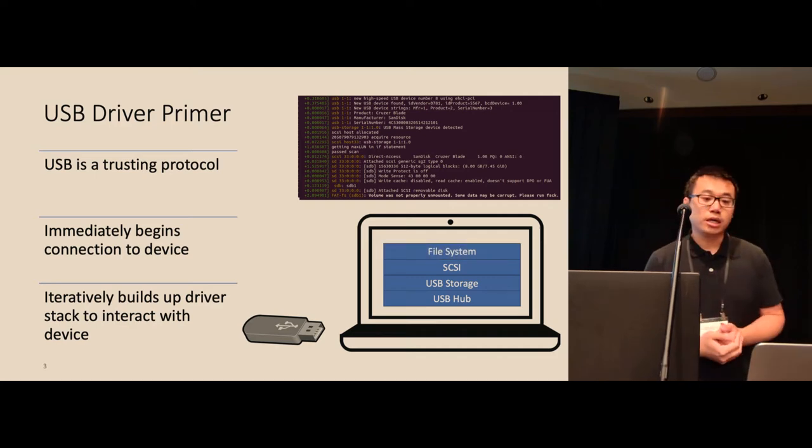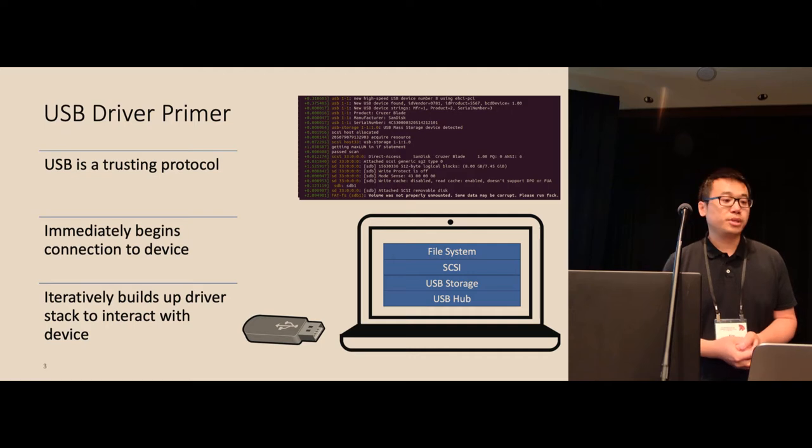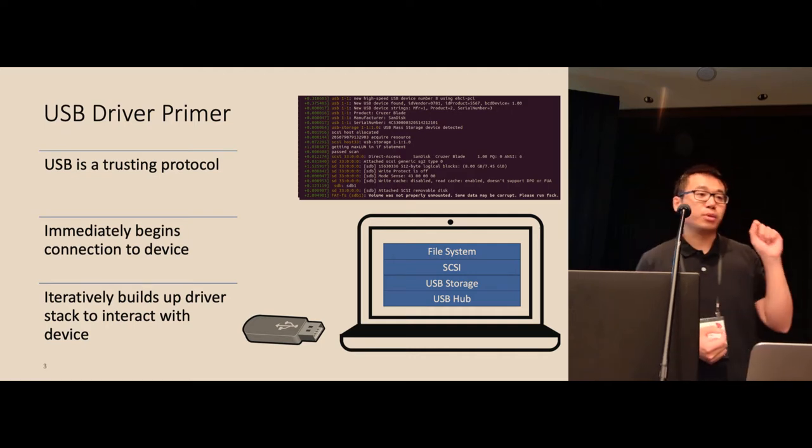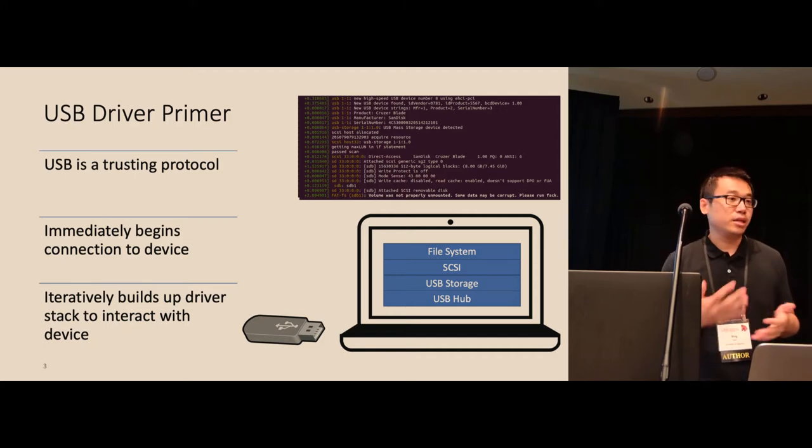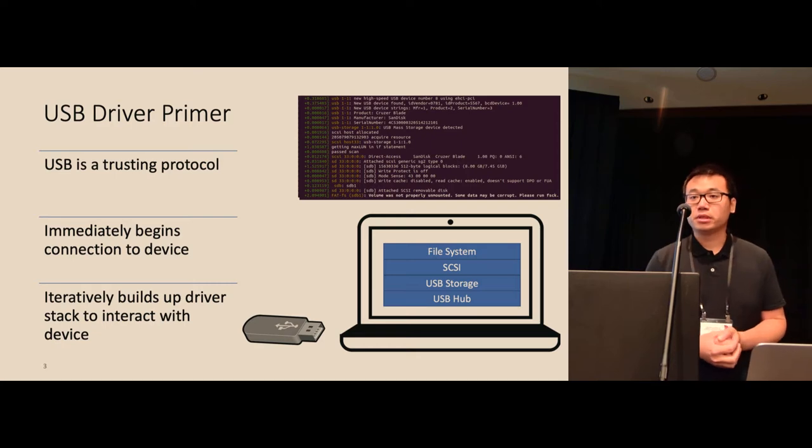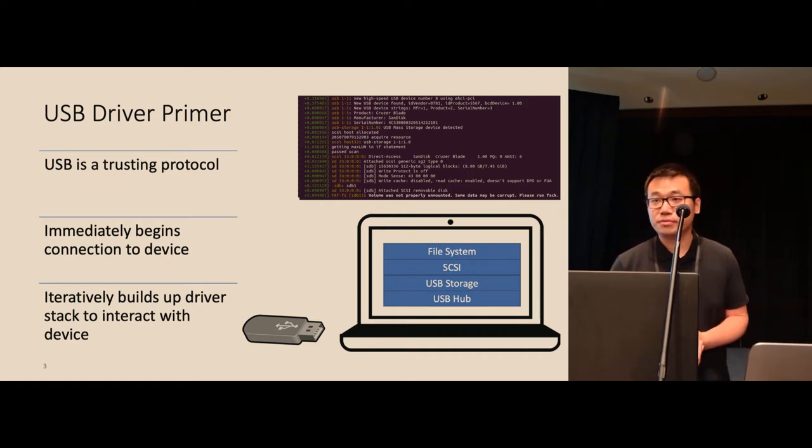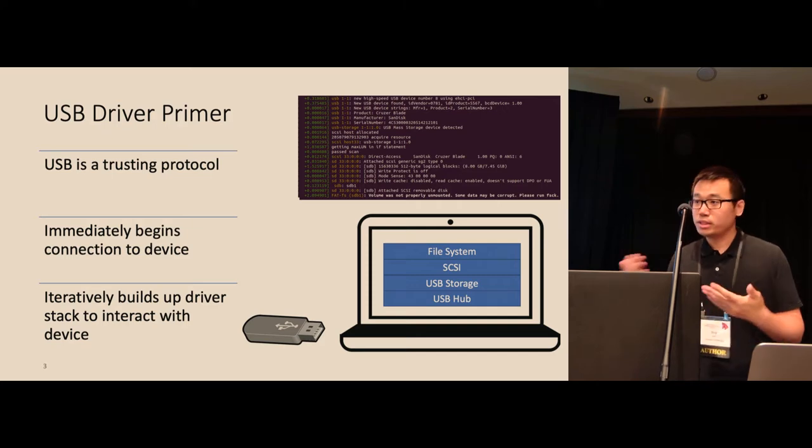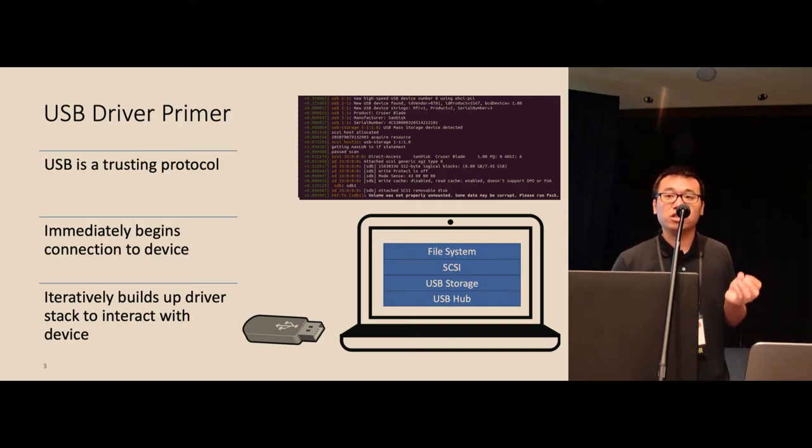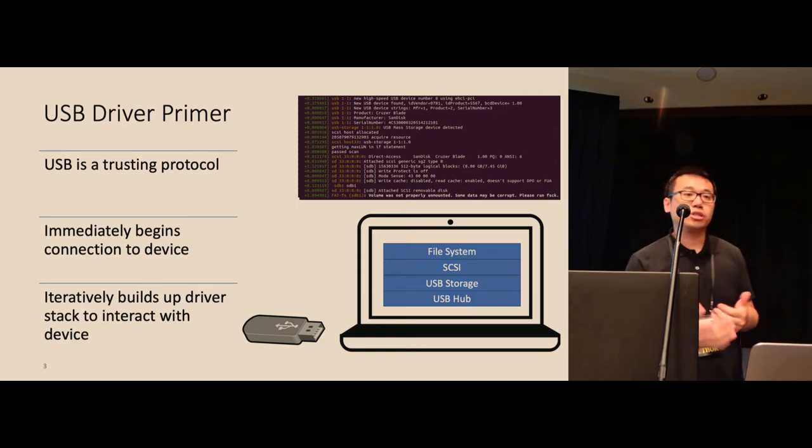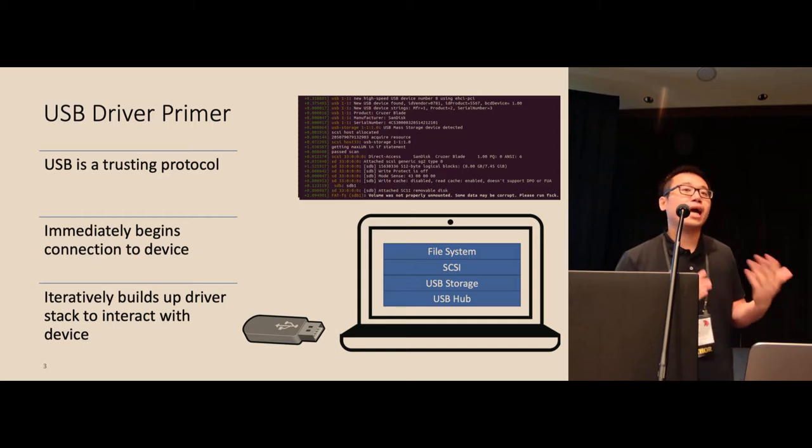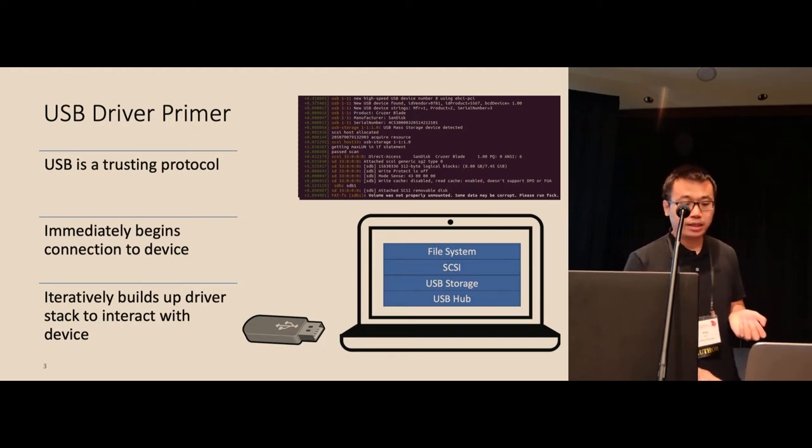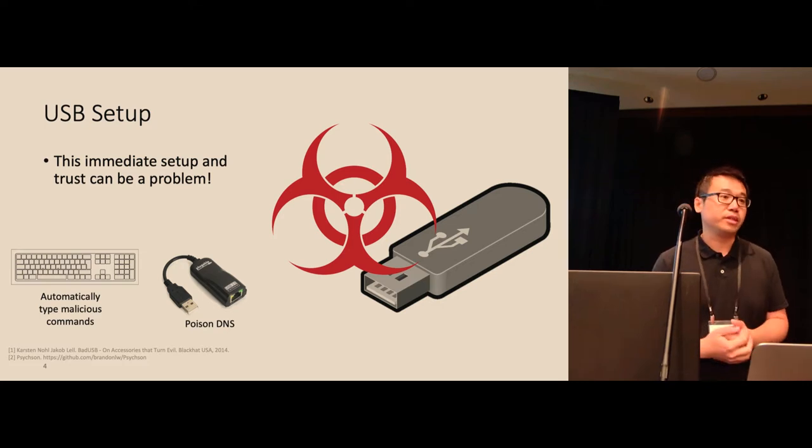To start, let's take a quick look at how a computer handles a USB device. USB is a trusting protocol. As soon as you plug in the USB device, the computer system immediately queries the device to ask what type it is. The USB can then declare all kinds of features from being a microphone to a joystick input device to a flash drive. Then the computer system will initialize the entire driver stack to support those features. USB was designed to involve less or even no user input, which makes it incredibly user-friendly. But it has implicit trust that the USB device is always correctly reporting its capabilities.